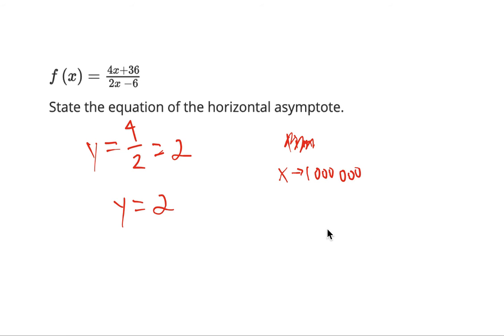If we substitute that number in, we would have 4 million plus 36 over 2 million minus 6. We should realize that the plus 36 and minus 6 don't really affect the equation much, so it would approximately equal 4 million divided by 2 million, which is 2. That's a quick way to understand it more intuitively.